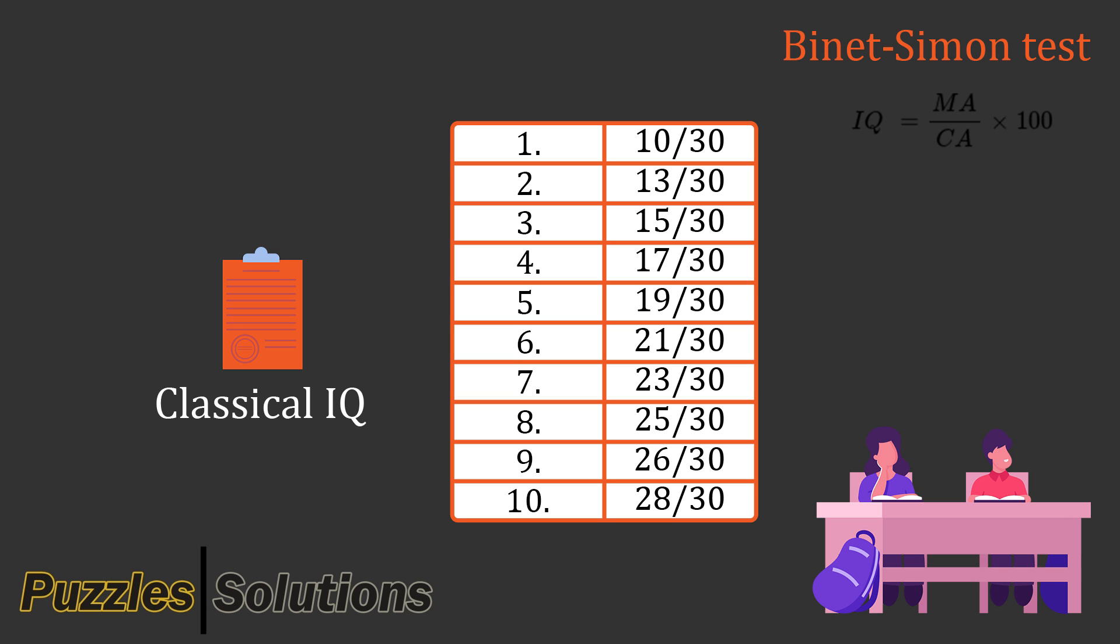Classical IQ is defined as mental age divided by chronological age multiplied by 100. The first subject was a fourth grader with the mental age of a fifth grader. If we assume that fifth graders are 9 years old and fourth graders are 8 years old, then their classical IQ would be 112.5. The second subject was a fifth grader with the mental age of a third grader, so a 9 year old with the mental age of a 7 year old. Their IQ would be roughly 77.8.